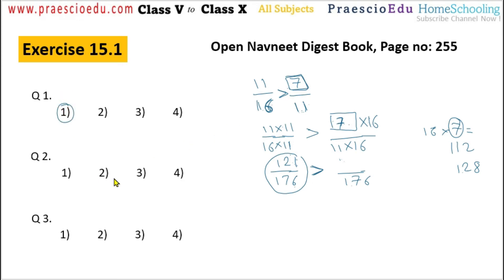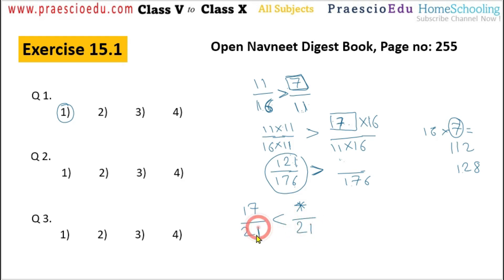Question number 2: if 17 divided by 21 is less than star divided by 21. The denominators are the same, so comparison is on a numerator basis. The star should be greater than 17. Looking at the options, 18 is just above 17 — 15, 16 are equal to or less than 17 — so 18 is given in option number 1.